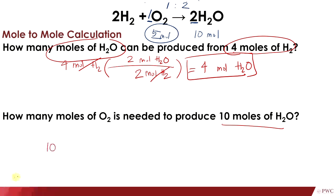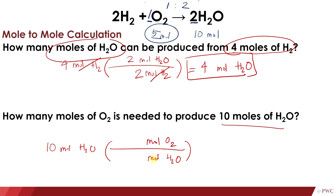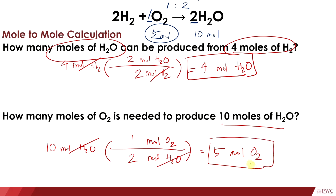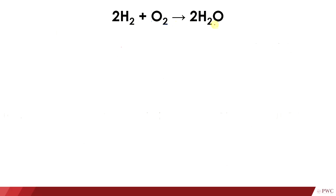Let's go back to the step-by-step process. We have 10 moles of H₂O; multiply with the molar ratio from moles of H₂O to moles of O₂. Just look at the numbers in the balanced chemical equation: for H₂O the number is 2, and for O₂ the number is 1. So: 10 times 1 equals 10, over 2, that's equal to 5. Cancel mole of H₂O; what's left is mole of O₂. Our guess is correct — 5 moles of O₂. This is a mole-to-mole calculation: multiply the given by the molar ratio, whose numbers come from the coefficients in the balanced chemical equation.